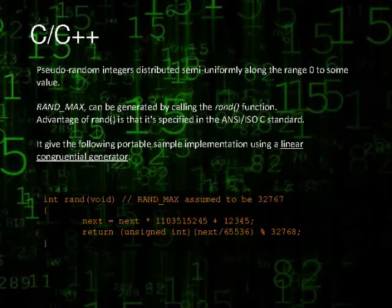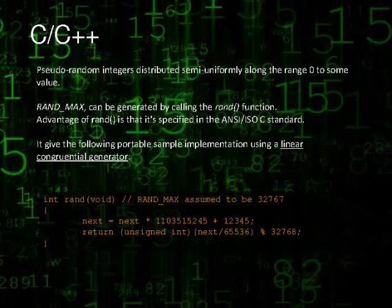Even though ANSI C requires the existence of a function rand that generates sequences of pseudo-random integers, it leaves the particular algorithms to be used unspecified. However, it does give the following portable sample implementation using a linear congruential generator.